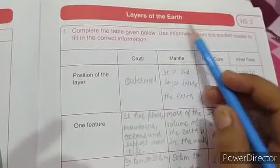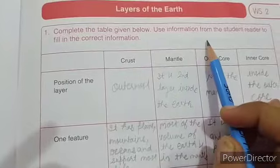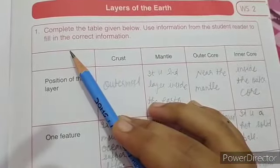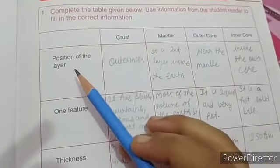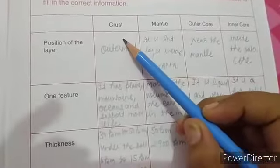Next, layer of the earth. Complete the table given below. Use information from the student teacher to fill the correct information. We will fill the position of the layer, one feature, thickness and temperature. So, first of all, we will fill the crust.